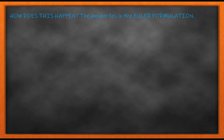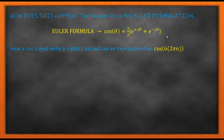How does this happen? The example shows us what frequency shifting is and how it is applied to a cosine signal. The answer lies in the Euler formula. The Euler formula states that a sinusoid signal can be expressed as the sum of complex exponentials, where cos theta is written as half of e to the power of j theta plus e to the power of minus j theta.